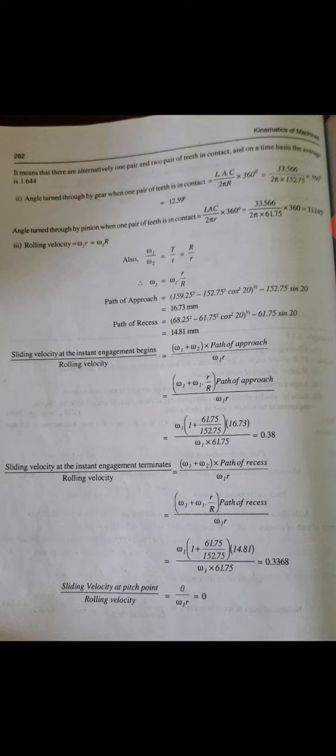Rolling velocity is omega_1 into r or omega_2 into R. The path of approach is 16.73. Path of recess, substitute the formula, we have 14.81.